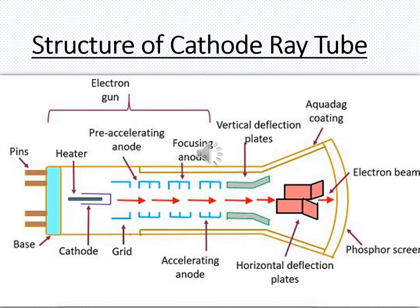These electron beams then reach the phosphor screen. The phosphor screen has the property of fluorescence or phosphorescence, such that when the electron beams strike the screen, it emits light. Depending on the type of material used on the screen — whether phosphor, cadmium sulphide, or something else — the color of the emitted light can be green, greenish yellow, or yellowish, depending on the material used.